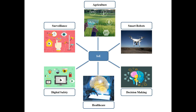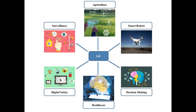IoT systems also provide digital safety and decision making. By digital safety, we mean that data generated from machines is automatically updated on a secured cloud. Decision making means they generate alerts — for example, in home automation systems, if the user is out of the home and has left some appliances on by mistake, they can switch them off even from a remote place using their mobile or other remote control systems.